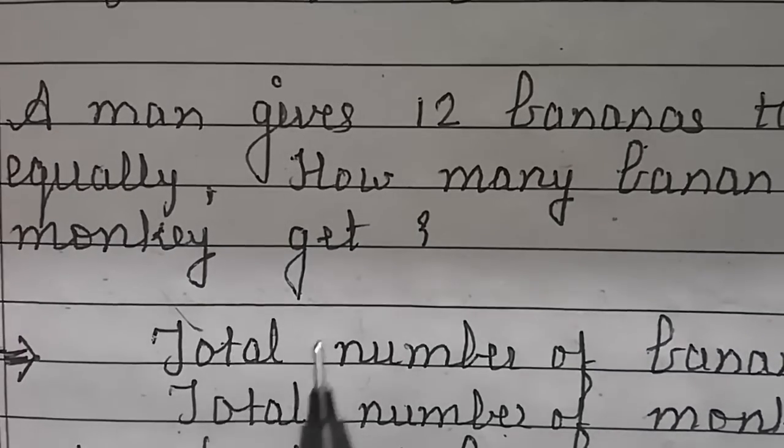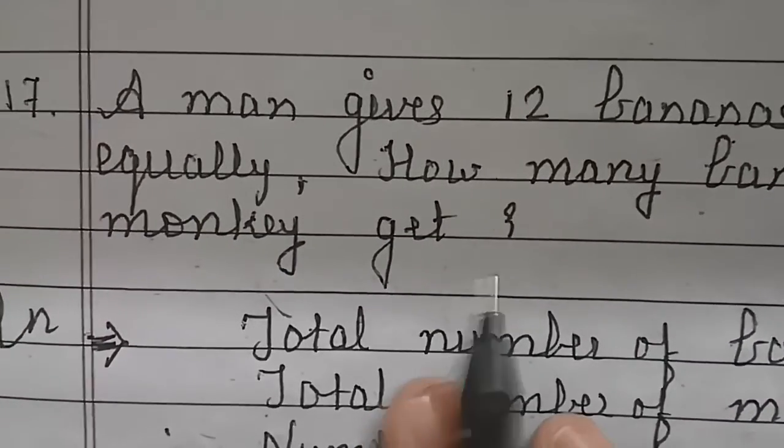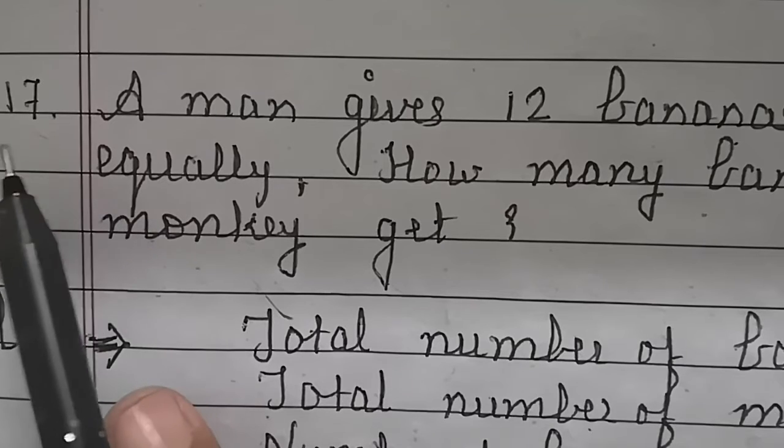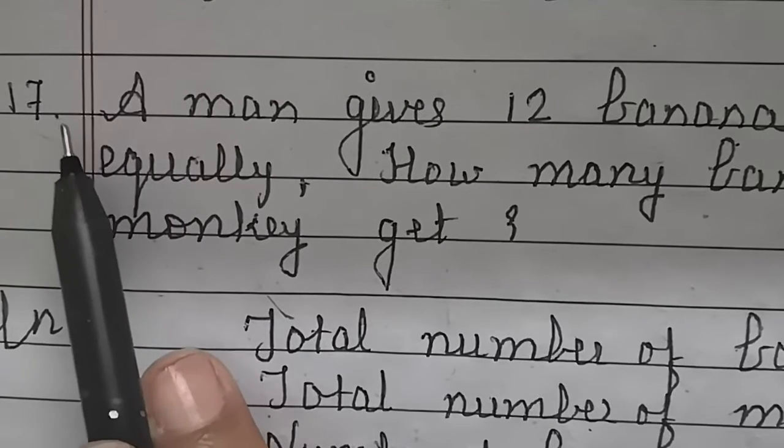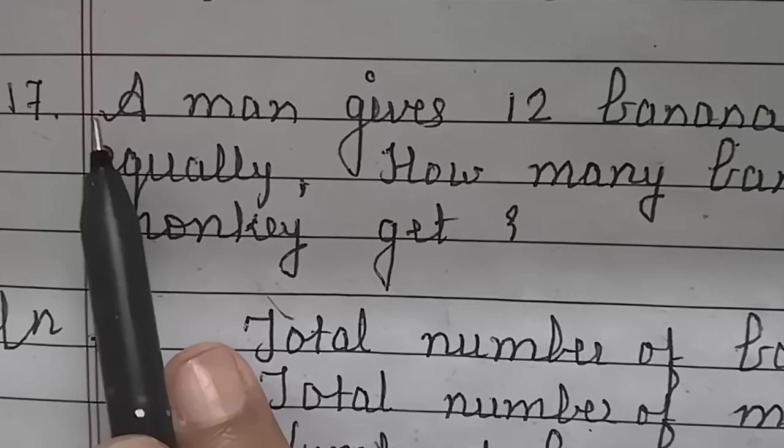Now children, we will solve the next odd number sum, that is sum number 17. From this sum onwards, our word problems are beginning.